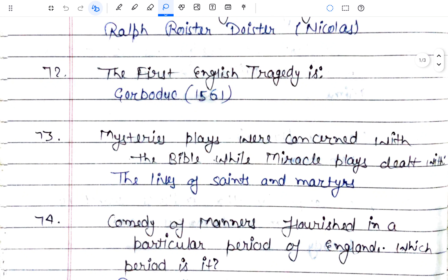Mystery play was concerned with the Bible, while miracle play deals with the lives of saints. To remember the difference: 'miracle' relates to magic (jaadu), and saints (sadhu) — so miracle plays deal with the life of saints. Once you remember one, the other follows automatically.